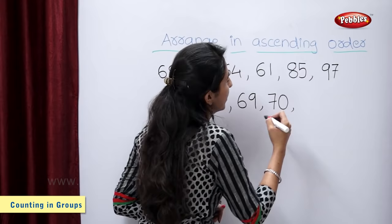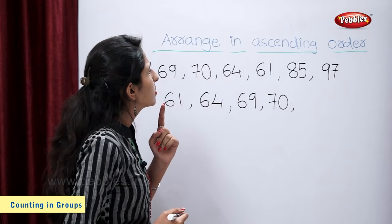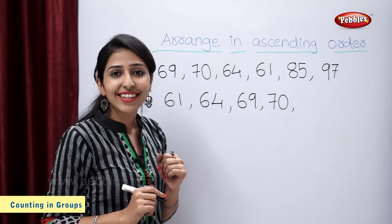Now, you tell me students, which number will come after 70 from these numbers? Tell me. Correct. 85.